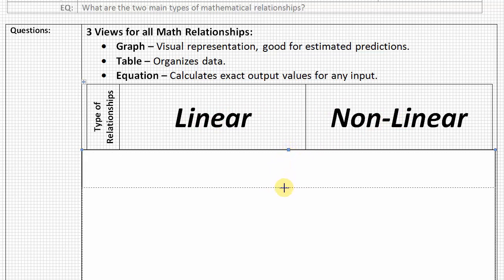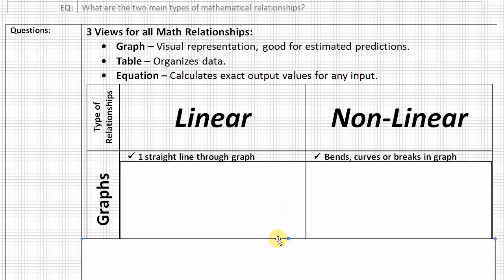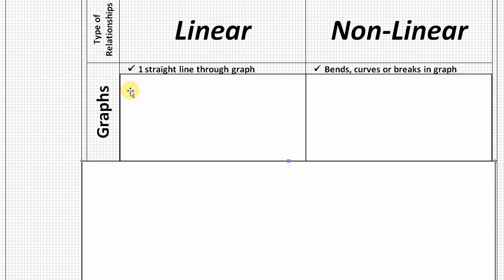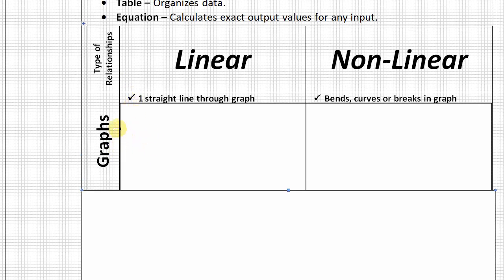So let's take a look first at graphs. In graphs, a linear relationship is seen, we know it's linear if it's just one straight line through the graph. It doesn't matter what direction that line is going as long as it is a straight line through the graph. It'll be linear.